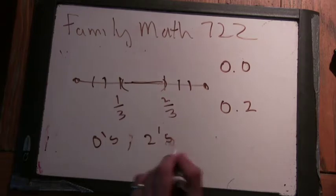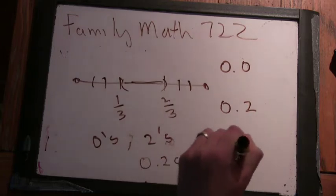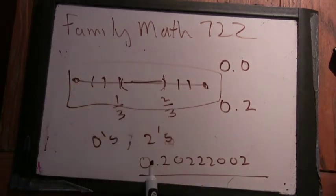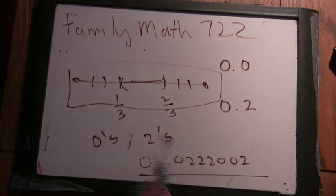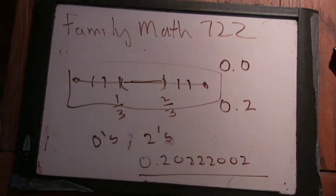So what we're left with is numbers that look like 0.20222002, so you just have zeros and twos. But in binary, I can represent all these numbers from zero to one, in the same way with zeros and ones, and I get all the numbers, and there's a mapping, one to one mapping between them. Cool.